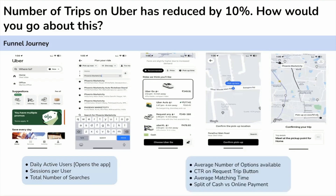The next metrics to check are: first, the average number of options available for a particular destination — the interviewer confirmed this hasn't changed. Second, the number of rides requested, meaning CTR on the request button. The interviewer confirmed there is a major drop here — number of rides requested is down by 10 to 12%, meaning people are not requesting rides. Other metrics like average matching time and split of cash versus online trips are fine and unchanged.